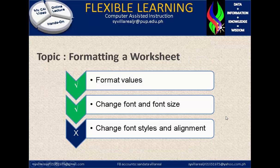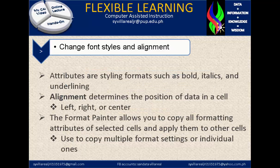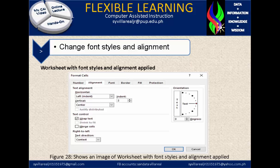Let's move on to our last topic: change font style and alignment. To change font styles and alignment, you need attributes of styling formats such as bold, italics, and underlining. Alignment determines the position of data in a cell, such as left, right, or center. The format painter allows you to copy all formatting attributes of selected cells and apply them to other cells, copying multiple format settings or individual ones — formatting only, not the values.